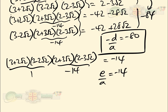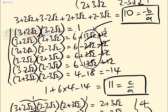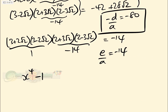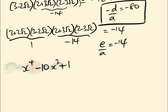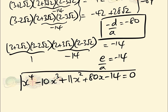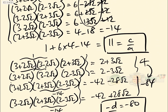Since all these values are integers, a = 1. Plugging everything in: -b/a = 10 so b = -10; c/a = 11; d/a = -80 so d = 80 (wait, -d/a = -80 means d = 80); e/a = -14. Our quartic is x⁴ - 10x³ + 11x² + 80x - 14 = 0 — exactly the same answer as before.